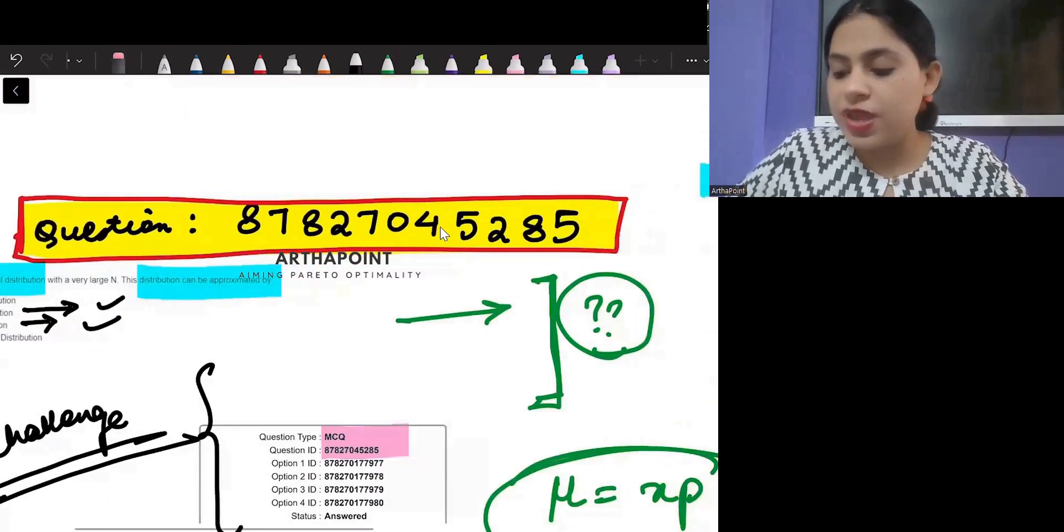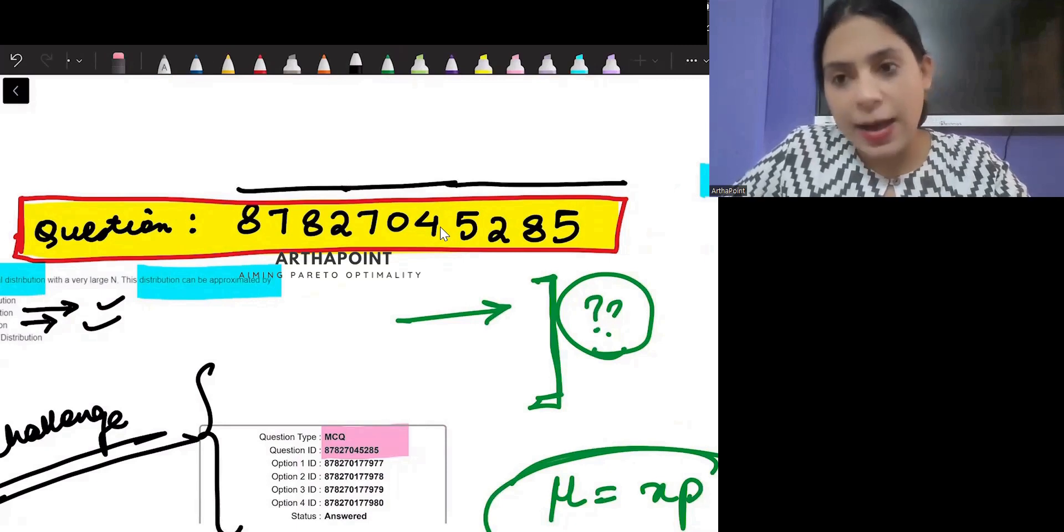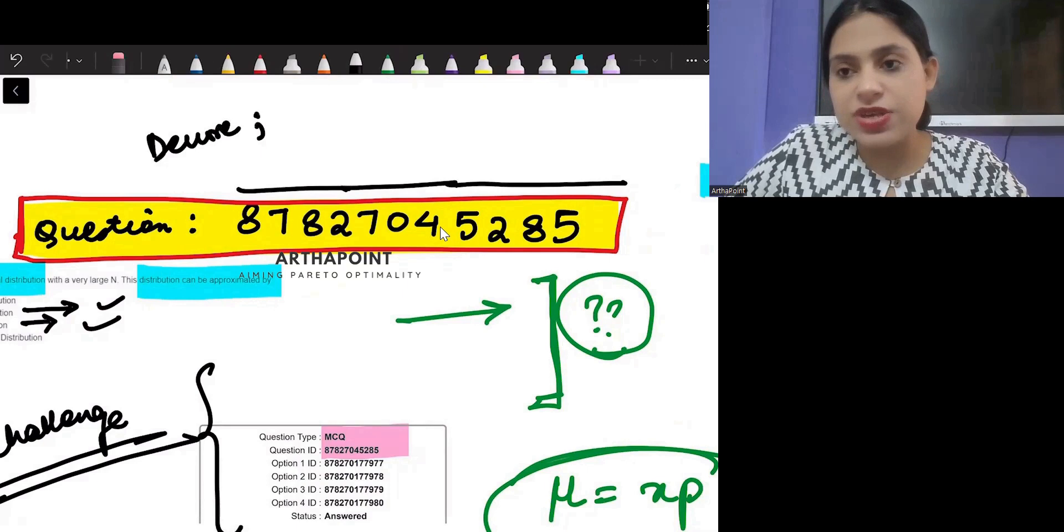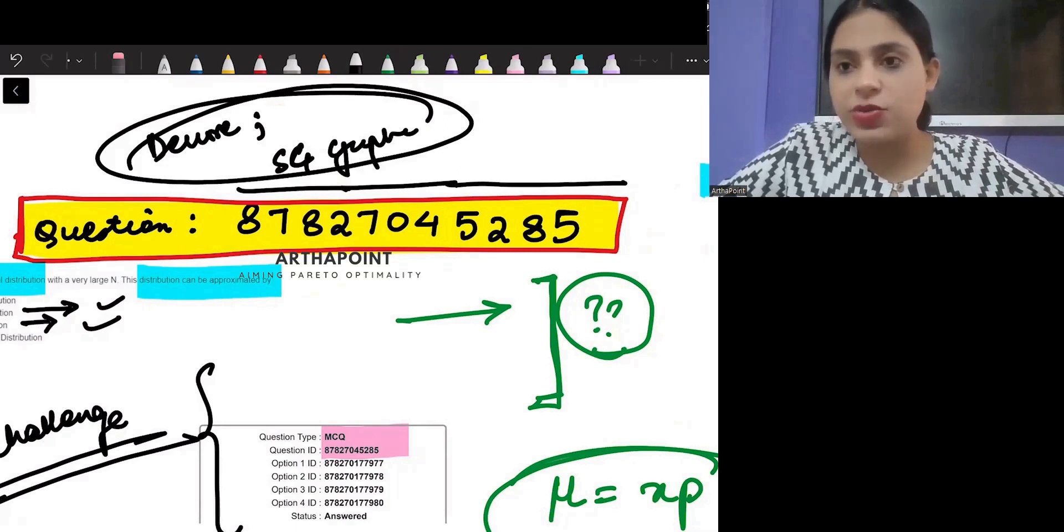This is the answer key to the question 8-7-8-2-7-0-4-5-2-8-5. I have given you the sources. It is present in Devore, it is present in S.C. Gupta. And you can go ahead and quote those sources also. Okay? Thank you.